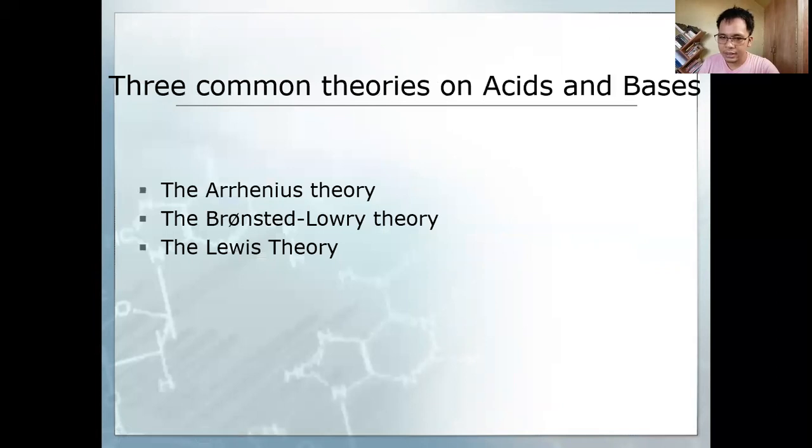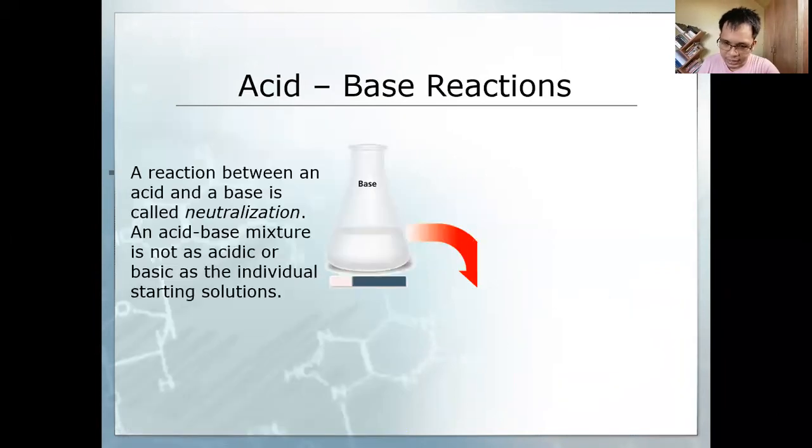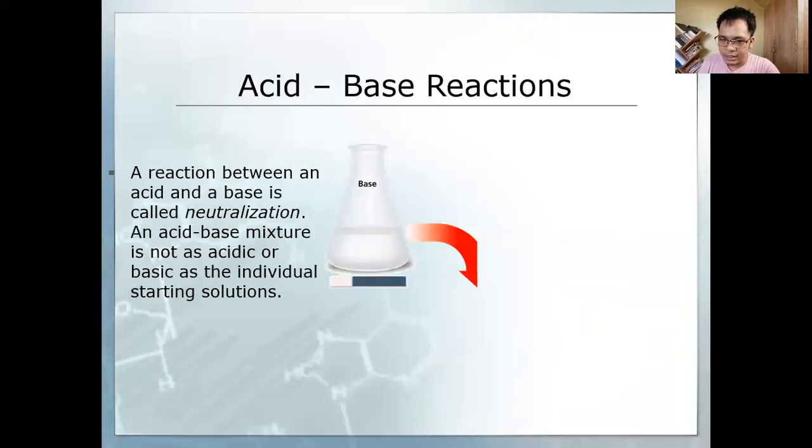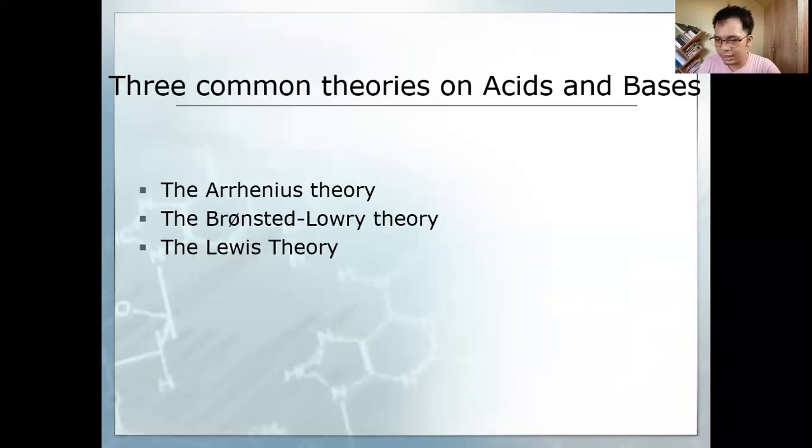For acids and bases, there are three common theories. We discussed earlier the acid-base reaction, pH, and the properties of bases and acids. Where did these explanations come from? These are the three common theories on acids and bases. There are actually seven theories, but these are the common ones: Arrhenius theory, Bronsted-Lowry, and Lewis theory.